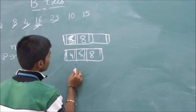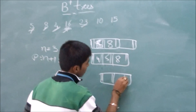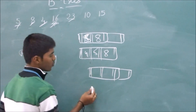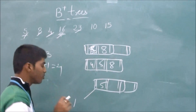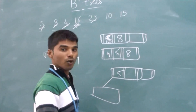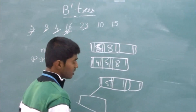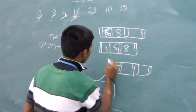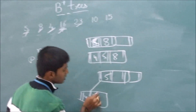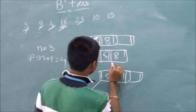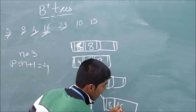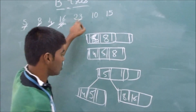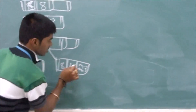So we divide this node. We divide it such that the parent node contains one element. The right child should contain values greater than the parent, and the left child should contain values less than or equal to the parent. So 4 goes to the left of 5. To the right of 5, we have 8 and 16. We also have 23, which gets placed to the right as it is greater than 16.